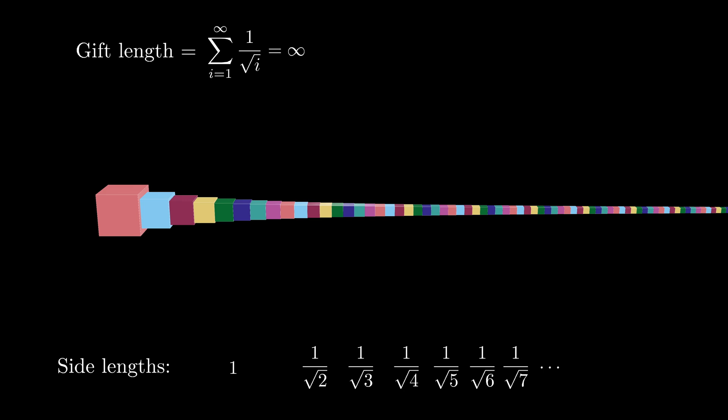Suppose we wanted to wrap this infinite gift. Notice that on cube i there are 4 faces that are visible. Each face on cube i has an area of 1 over root i times 1 over root i, which is 1 over i.